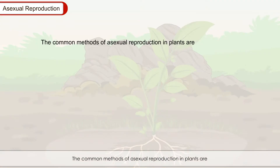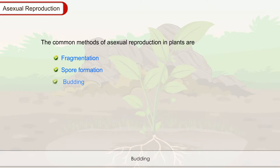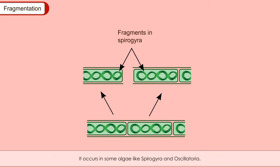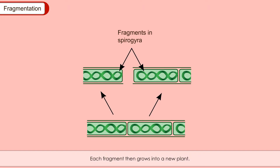The common methods of asexual reproduction in plants are fragmentation, spore formation, budding, and vegetative propagation. Fragmentation occurs by breaking the body into fragments or into two or more pieces. It occurs in some algae like spirogyra and oscillatoria. The filament of these algae breaks into two or more fragments, and each fragment then grows into a new plant. The process of fragmentation continues and within a short period of time, algae grow over a large area.